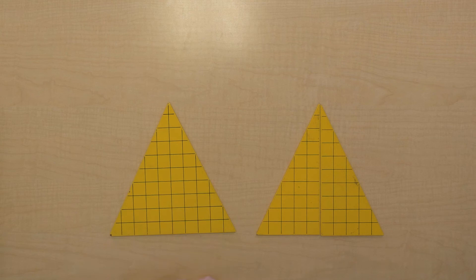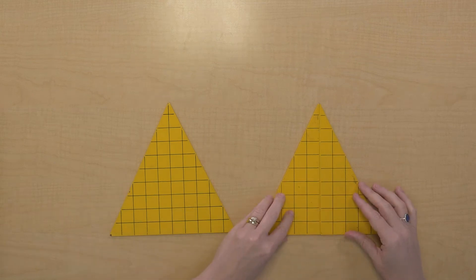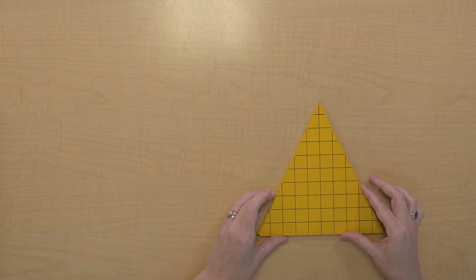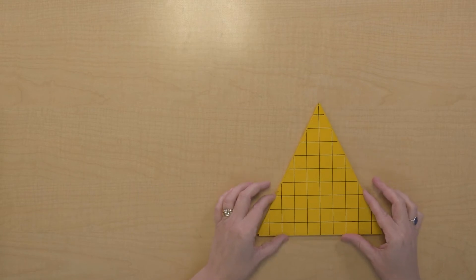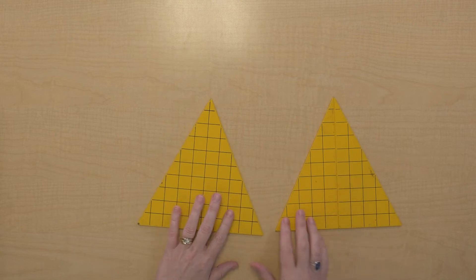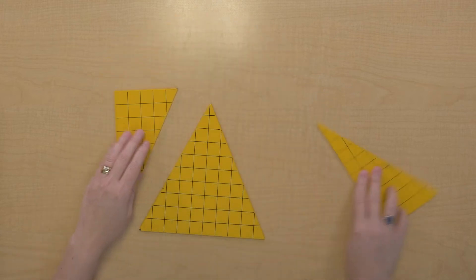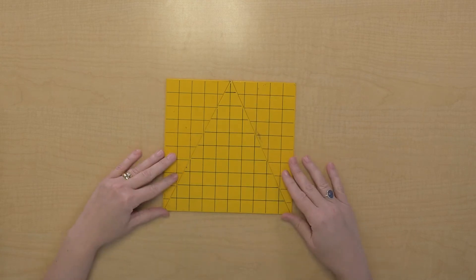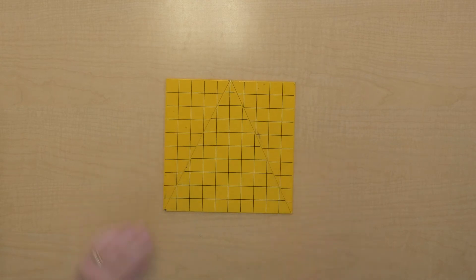But here I have another equivalent triangle. So watch, if we do something like this, could we find the area of this figure now? We sure can. We've got a base of 10 and a height of 10.